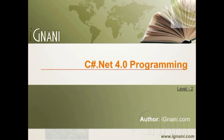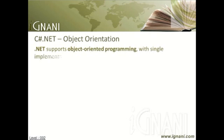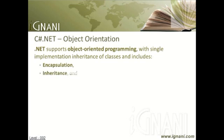In this chapter, I am going to get close up with .NET. Let us look at some of the features that it provides us. Object Orientation: .NET supports object-oriented programming with single implementation inheritance of classes, and includes encapsulation, inheritance, and polymorphism.